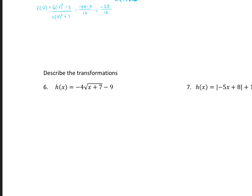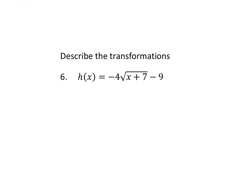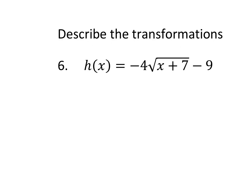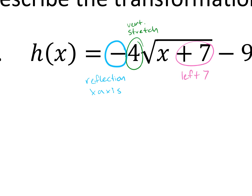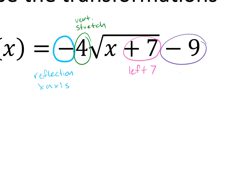For number 6, we describe the transformations. The negative on the outside is a reflection over the x-axis. Multiplying by 4 on the outside is a vertical stretch. Adding 7 on the inside shifts the graph left 7. And subtracting 9 on the outside shifts it down 9.